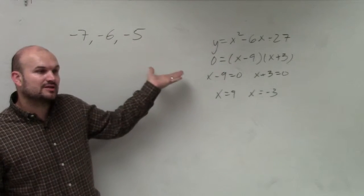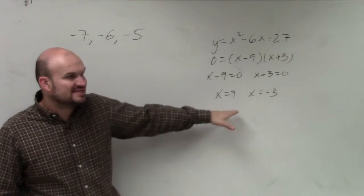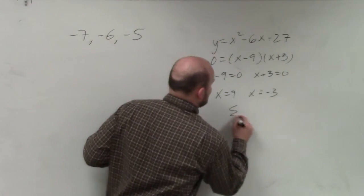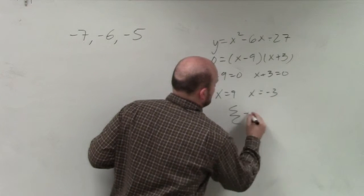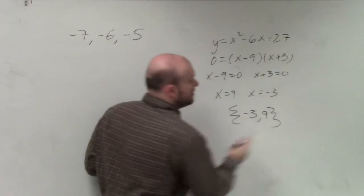So now, there's a couple problems that what we're going to do is now I'm giving you the zeros. Or what we do is we write this as a solution set, negative 3 and 9. Right?